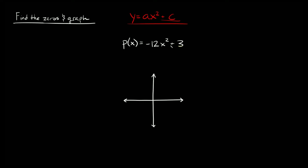Here we have p of x is equal to negative 12x squared plus 3. The first thing we see is a negative 12 — 12 is bigger than 1, so this is going to be a skinny parabola, and it's negative so it's going to be upside down. We also have a positive 3, so that's where our parabola hits the y-axis. Let's actually graph this by first finding the zeros — all you have to do is set your function equal to zero.